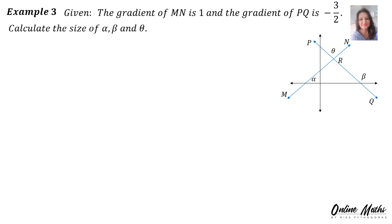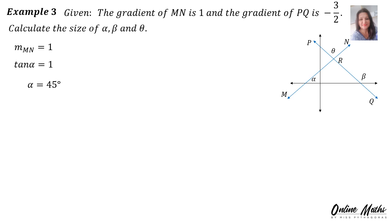Example 3. Given the gradient of line MN is 1 and the gradient of line PQ is negative 3 over 2, calculate the size of alpha, beta, and theta. We start with the gradient of MN equal to 1 — that is given. Therefore we can work out the inclination and hence the size of alpha by using the formula tan alpha equals 1. We say shift tan 1 equals, and we find that alpha is 45 degrees.